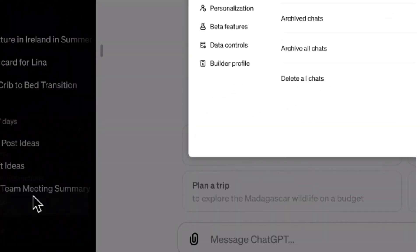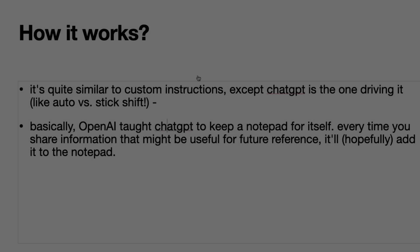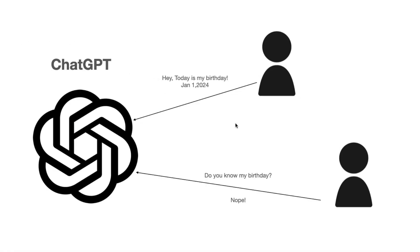Let me quickly show you how this memory thing actually works. Typically, when you go to ChatGPT and tell it on January 1st 2024 that today is your birthday, ChatGPT would just wish you back and that's it. If you go the next day, the day after, or one year later and ask ChatGPT 'do you know my birthday?' — ChatGPT is not going to remember. It's not going to give you anything. So what is changing?